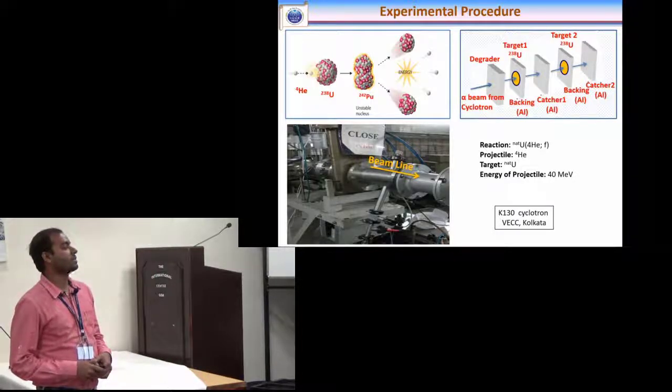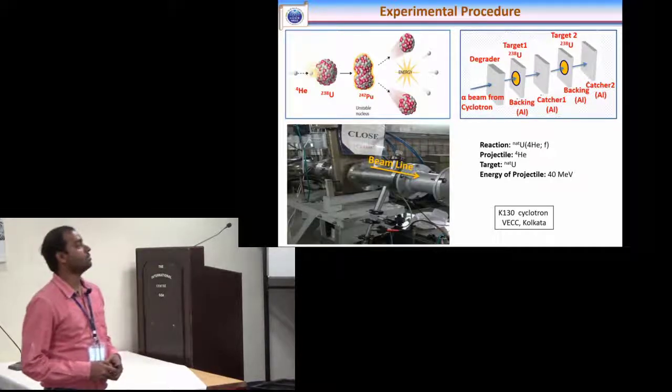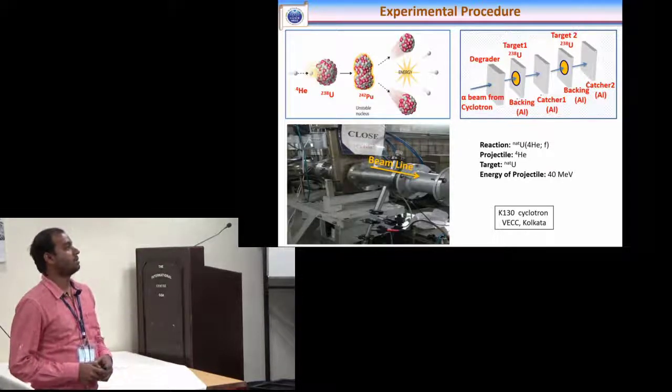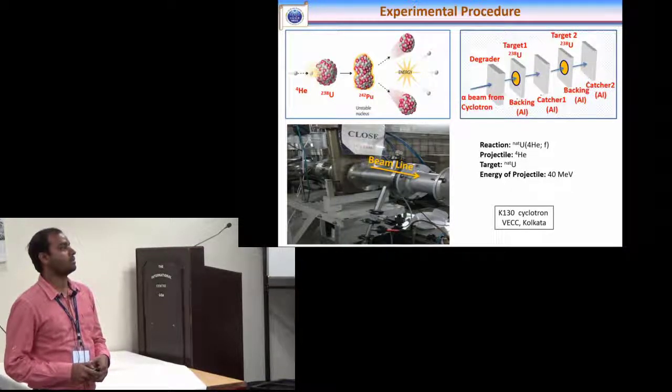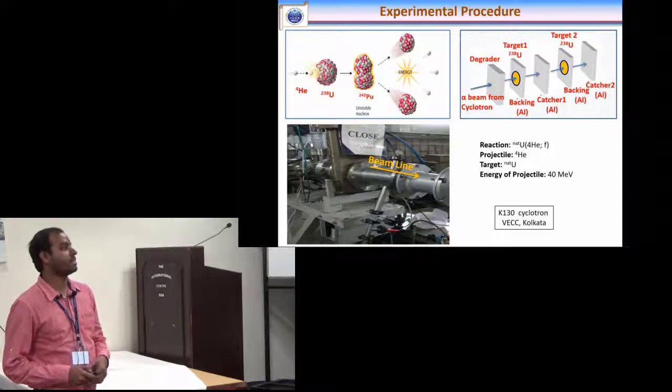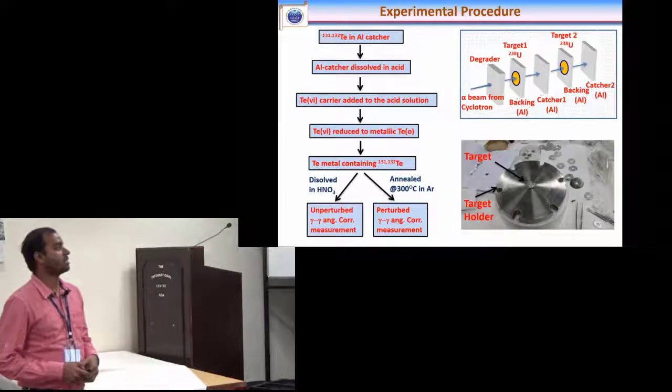We have performed efficient experiment at VECC Kolkata using 40 MeV alpha beam on a natural uranium target and the targets and catcher was designed like this and we have collected all the catcher foils and then we have performed radiochemical separation process to separate the tellurium isotopes.